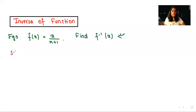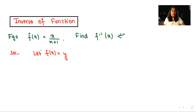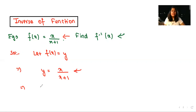Let us start with the solution. First, we know that f(x) can also be written as y, so let f(x) = y. The same steps apply to all other inverse function questions. Since f(x) = y, the equation becomes y = x / (x + 1). From here we will convert in terms of x.